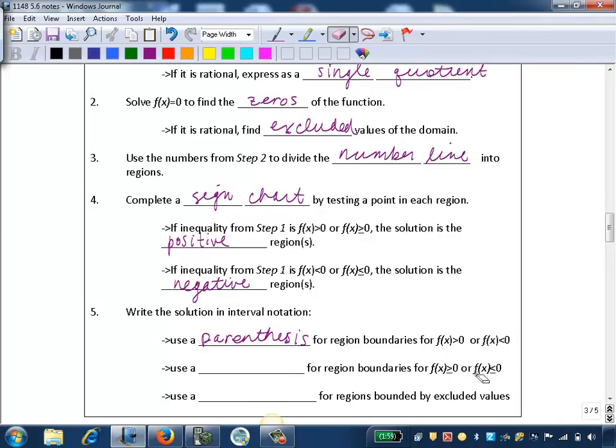And then if we have a greater than or equal to or a less than or equal to, if we have the equals on there, then we know we're going to use a bracket. And finally, for the regions that are bounded by excluded values, so in those rational functions if you have any excluded values of the domain, you're going to use a parenthesis here, since we know that the function can never equal those excluded values.